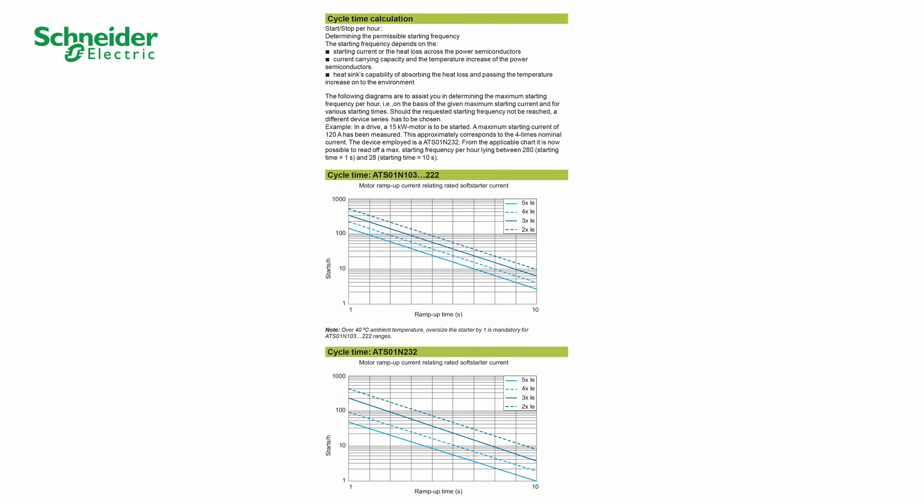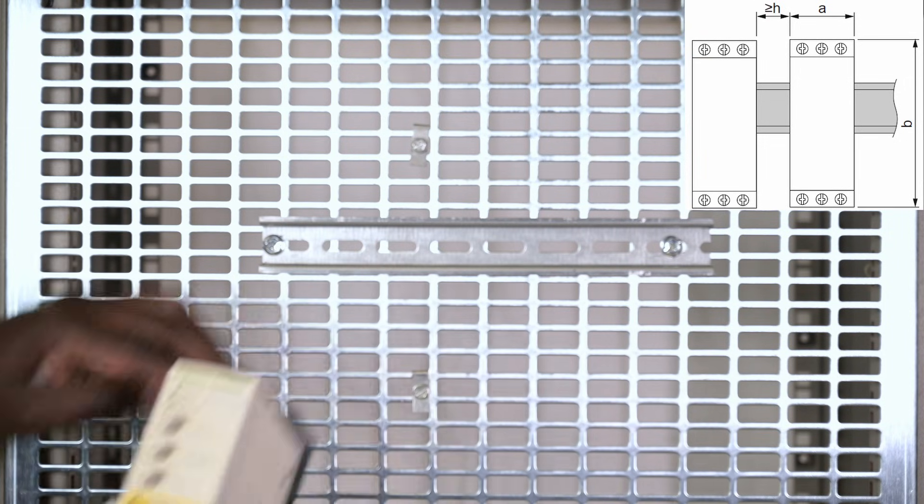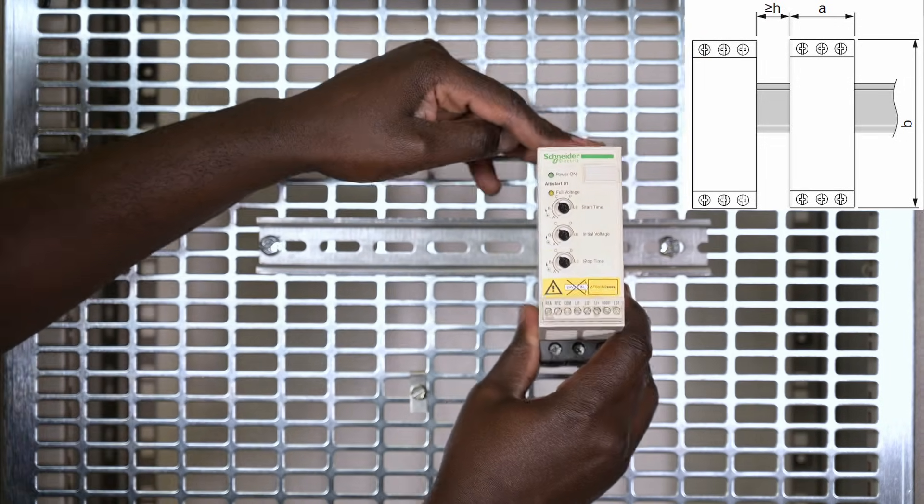For the mounting type and cycle time calculation, refer to the ATS-01 catalog. The cycle time must be well calculated to avoid product damage. For side-by-side conditions, refer to the ATS-01 catalog.